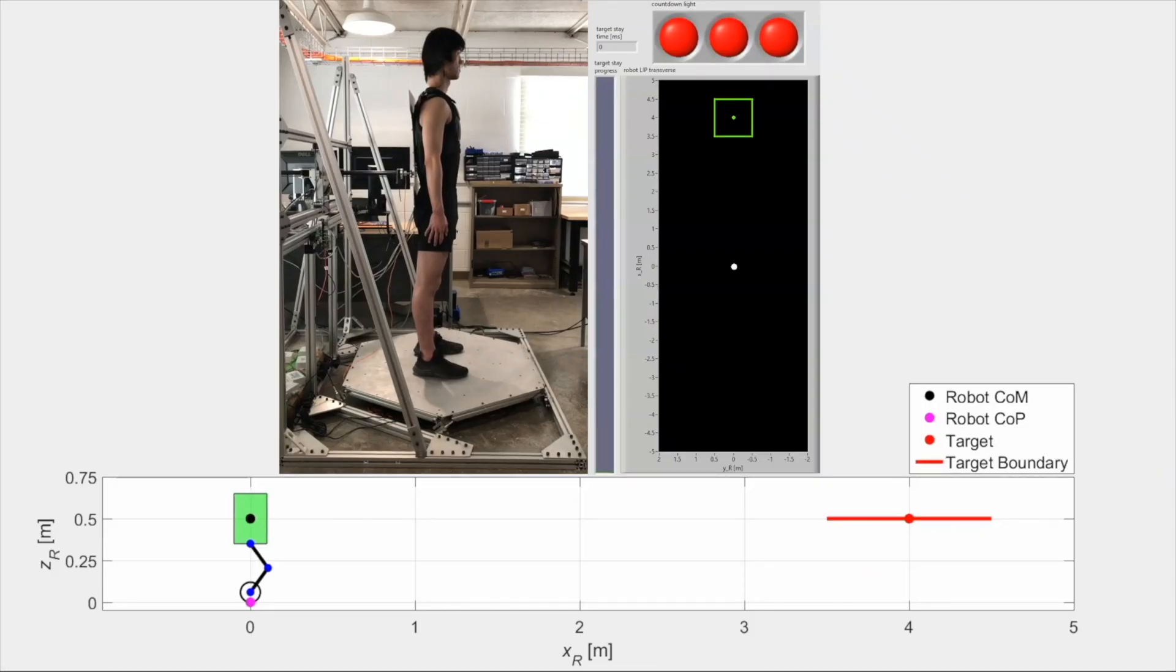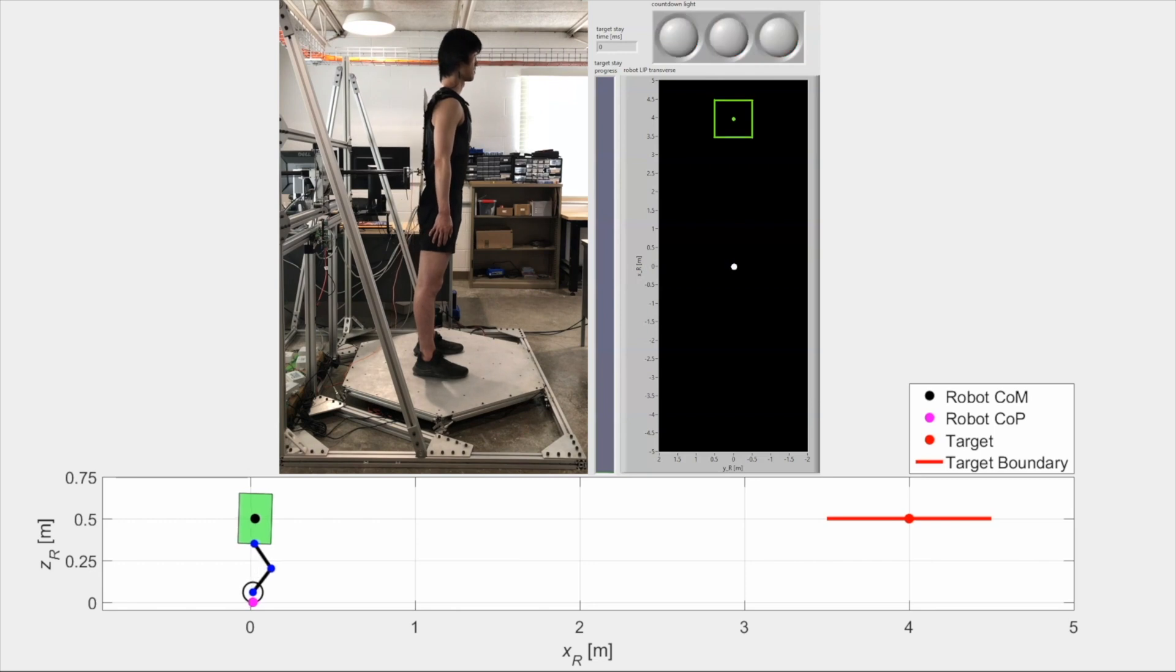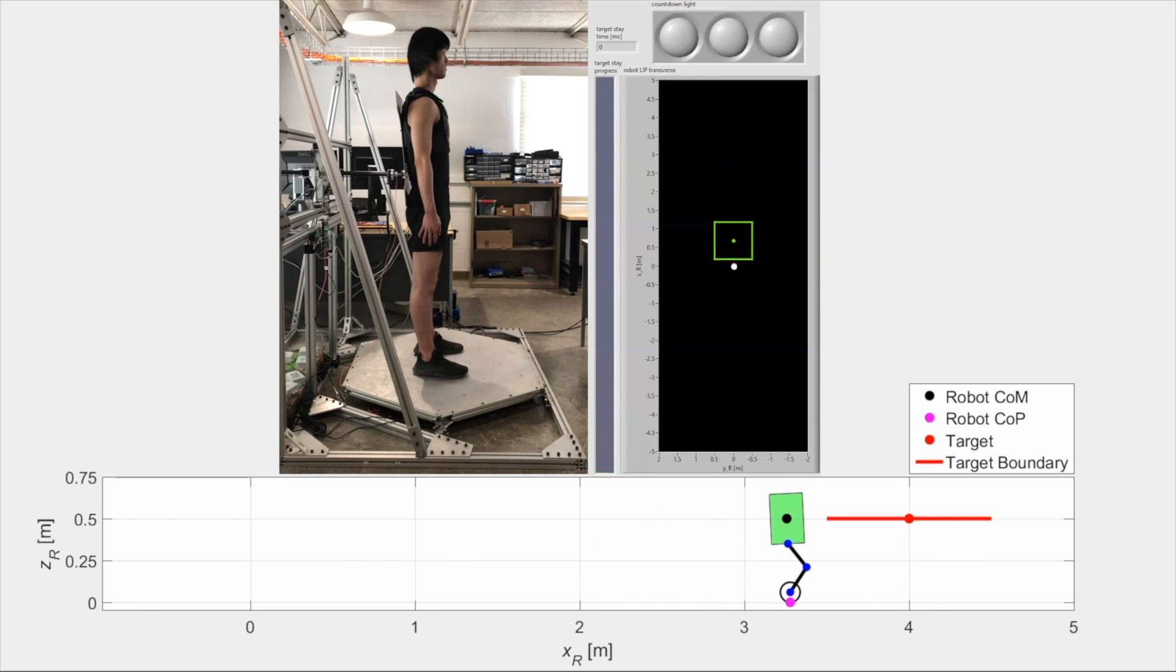In position tests, the target remains still. The subject teleoperates the robot after a three-second countdown such that the robot stays within the target for three seconds.